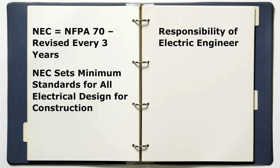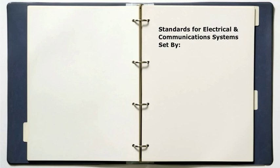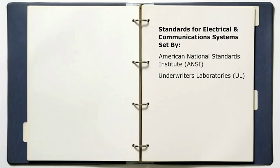On smaller projects, a licensed electrical contractor will know the codes. However, since interior designers typically will specify the location of electrical outlets and fixtures, they need to know basic code requirements. For example, the NEC includes restrictions on the proximity of electrical components and plumbing. Standards for electrical and communications systems are set by the American National Standards Institute, the National Electrical Manufacturers Association, and Underwriters Laboratories. The Americans with Disabilities Act specifies mounting heights for outlets and fixtures in handicapped accessible spaces.